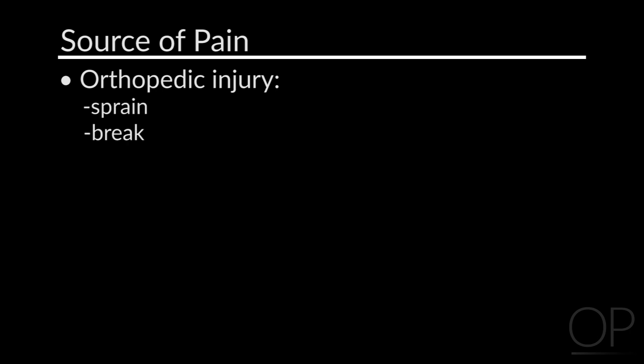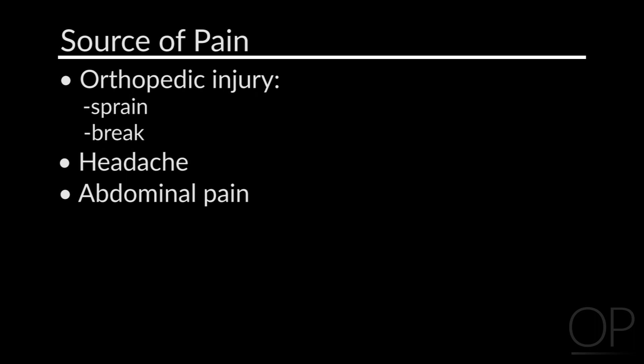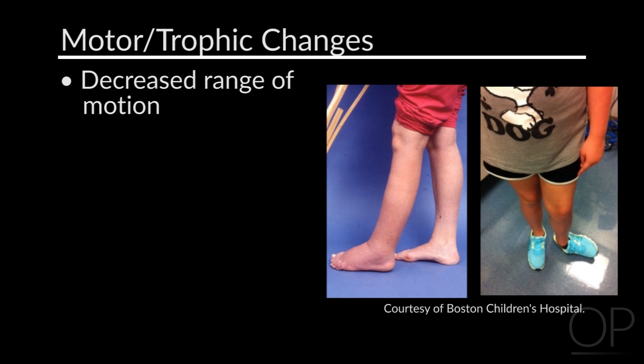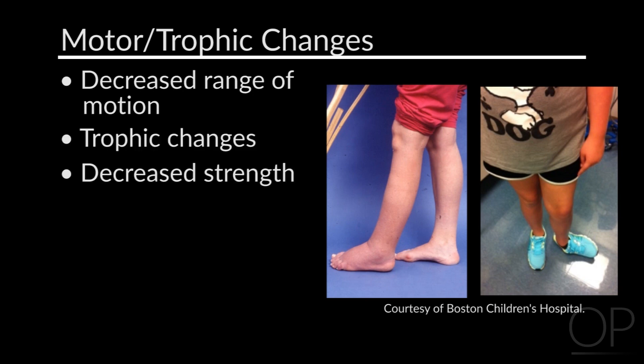I'm going to briefly review the changes that occur in patients with Chronic Regional Pain Syndrome. Regardless of the cause of the pain — whether it be an orthopedic injury, a sprain, a break, headache, or abdominal pain — patients present with generalized deconditioning, decreased range of motion, trophic changes, decreased strength, and decreased endurance.